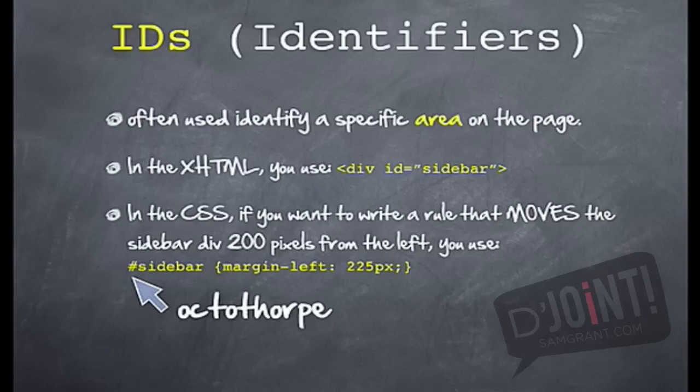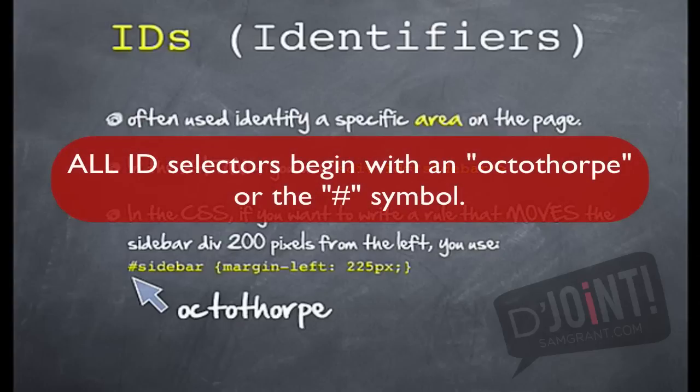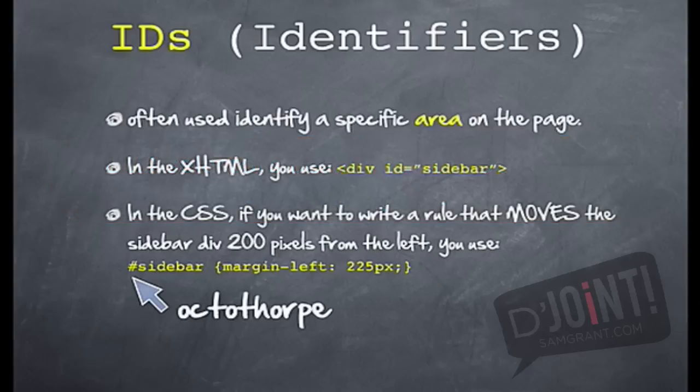If you want to continue to call it the numerical sign, you can, but it's actually the octothorpe. This is the true identifier for all IDs. Make sure you include this one so that the CSS can distinguish it from all of the other types of selectors.